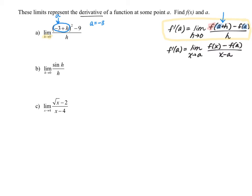Remember, a plus h is being substituted into some unknown function. So if we look at the quantity negative 3 plus h — what's happening to that quantity? It's being squared. So it looks like our function was x squared, because we have negative 3 plus h substituted into x squared, giving us negative 3 plus h, squared. Now let's look at the 9, because we can basically check our work with this 9.